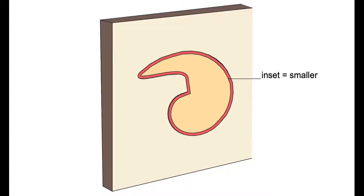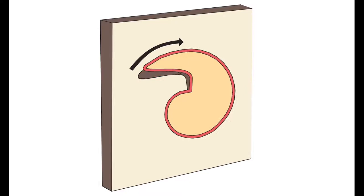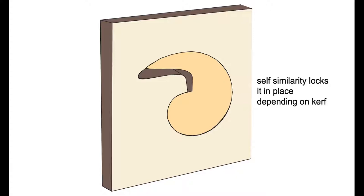We place an inset with the same shape inside that cutout. But kerf makes that inset smaller. We can still lock the inset in place by rotating it because of the self-similarity of the nautilus spiral. This makes the inset lock in place depending on the amount of kerf applied to the model.